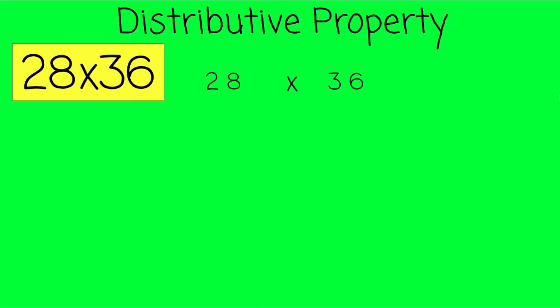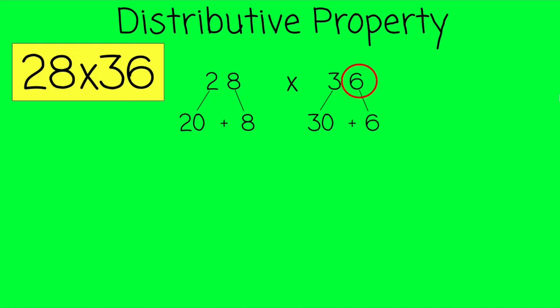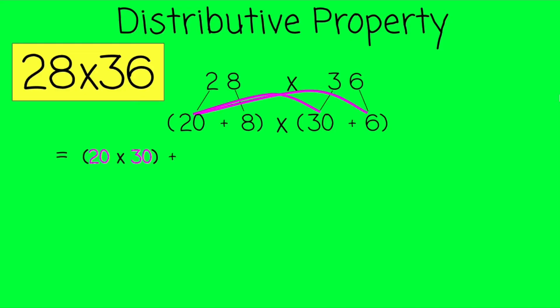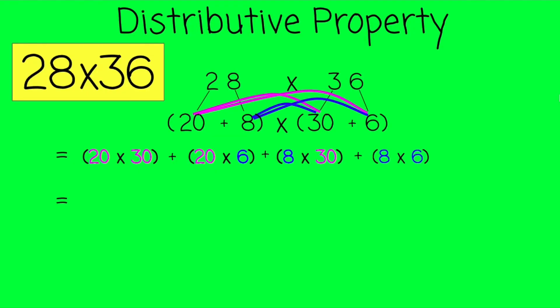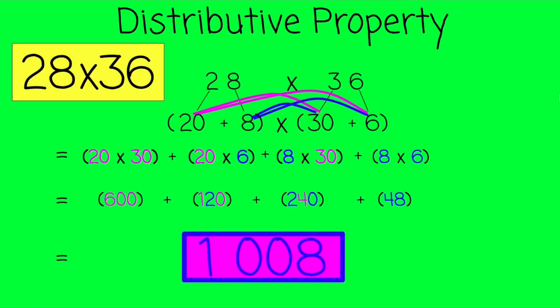Let's do one more example: 28 times 36. Let's put 28 in expanded form — that 2 represents 20, that 8 is 8, that 3 is 30, and that 6 is 6. We'll put parentheses around each expanded form. 20 times 30, then 20 times 6, now 8 times 30, and 8 times 6 — which gives us 600, 120, 240, and 48. We'll add them all together for a final product of 1008.